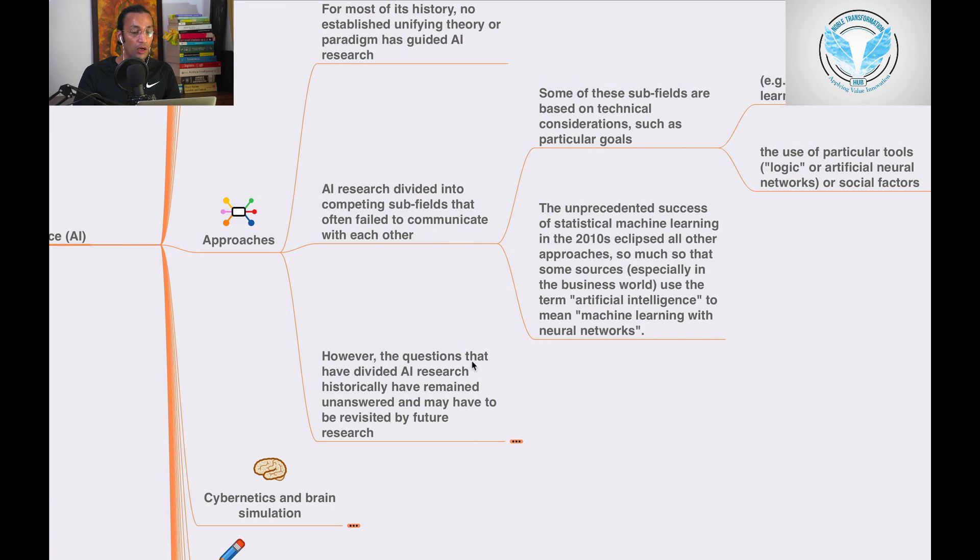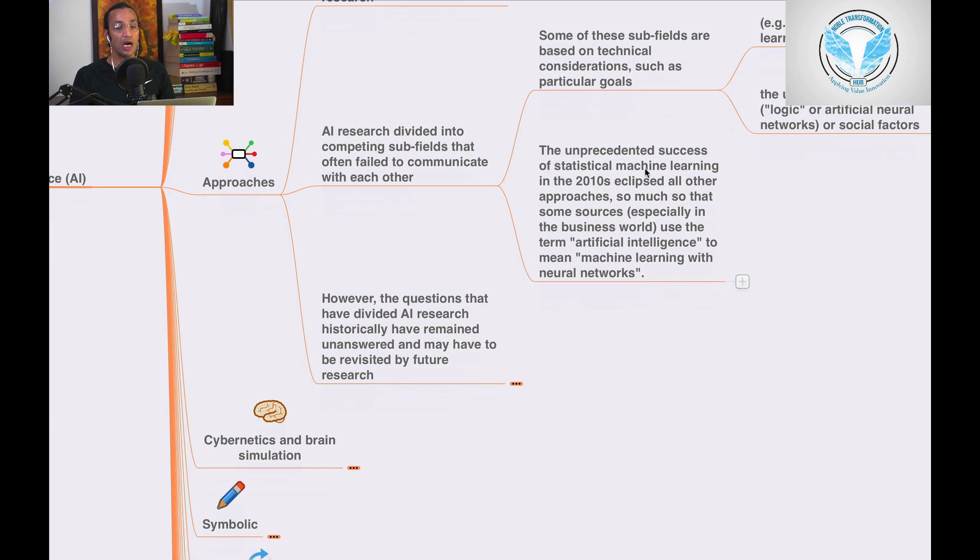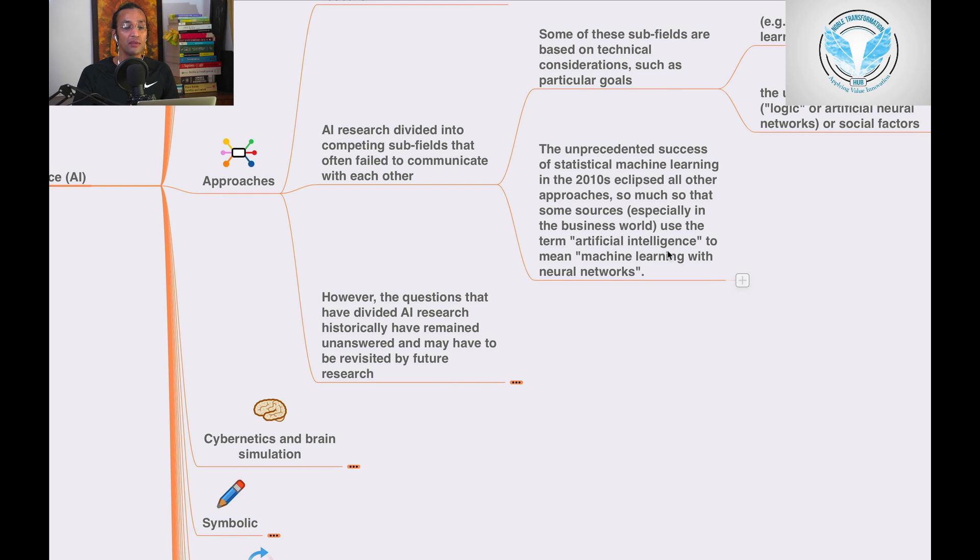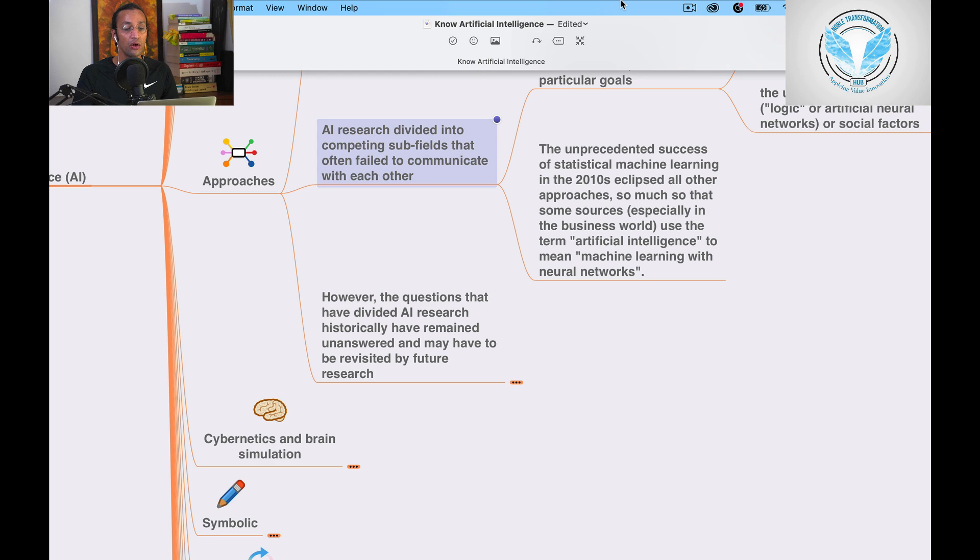The unprecedented success of statistical machine learning in the 2010s eclipsed all other approaches so much that some sources, especially in the business world, use the term artificial intelligence to mean machine learning with neural networks.